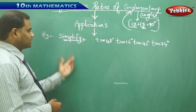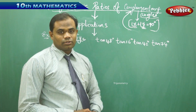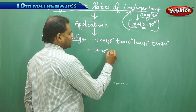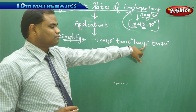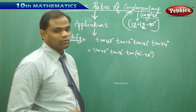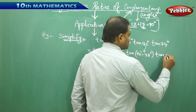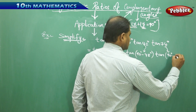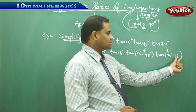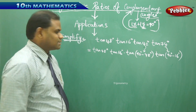Let's see an example problem: simplify tan 48° × tan 16° × tan 42° × tan 74°. To simplify, let's rearrange by rewriting tan 42° as tan(90° − 48°), since 90 minus 48 is 42. Similarly, tan 74° can be written as tan(90° − 16°), which gives 74 degrees. So without disturbing the first two products, we substitute these equivalent forms.